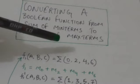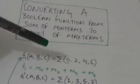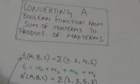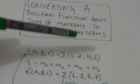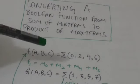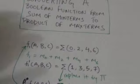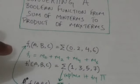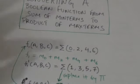f1 is expressed in the sum of minterms. The minterms included in this function f1 have subscripts 0, 2, 4, and 6. So f1 equals m0 plus m2 plus m4 plus m6. Now, first of all, find the complement of this function f1.